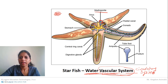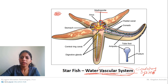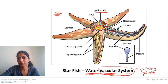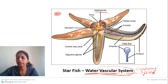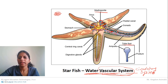Once water goes inside, it gets circulated in the ring canal — the circular canal around the mouth of the starfish, shown in blue in the diagram. From the ring canal, water is distributed into each arm through the radial canal. Once water enters the radial canal, it goes to the tube feet — structures on the sides of each radial canal.